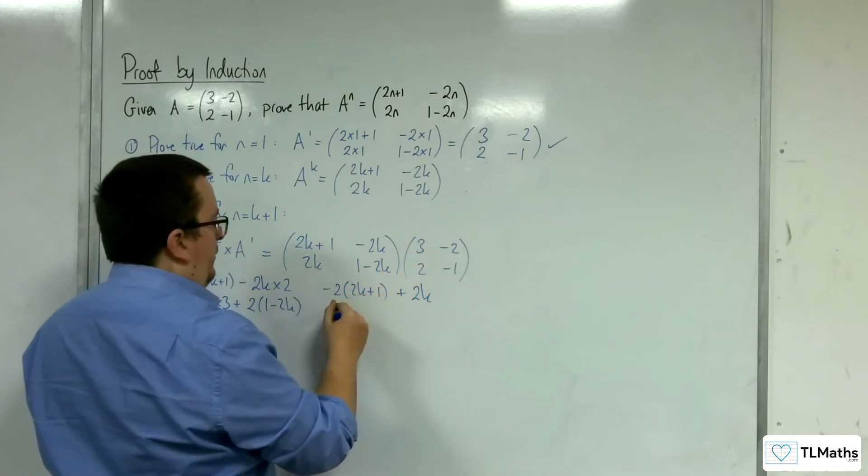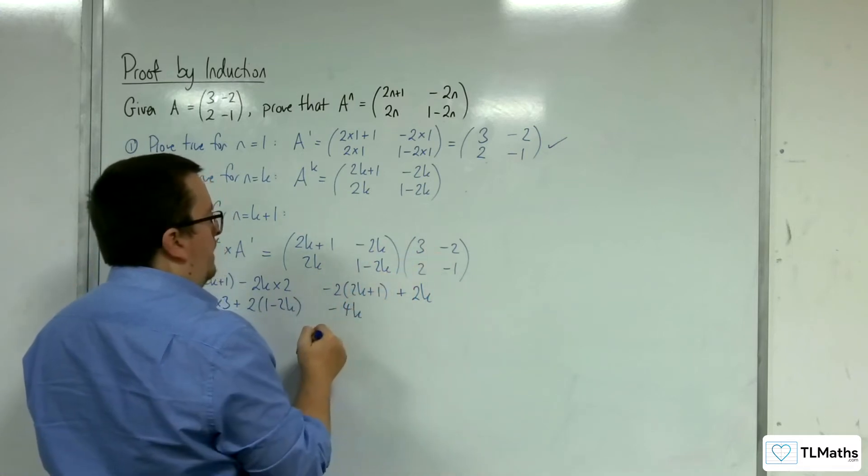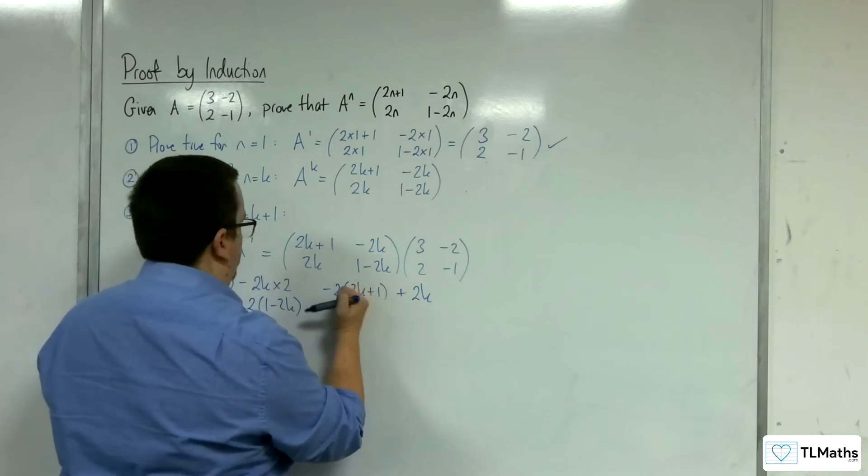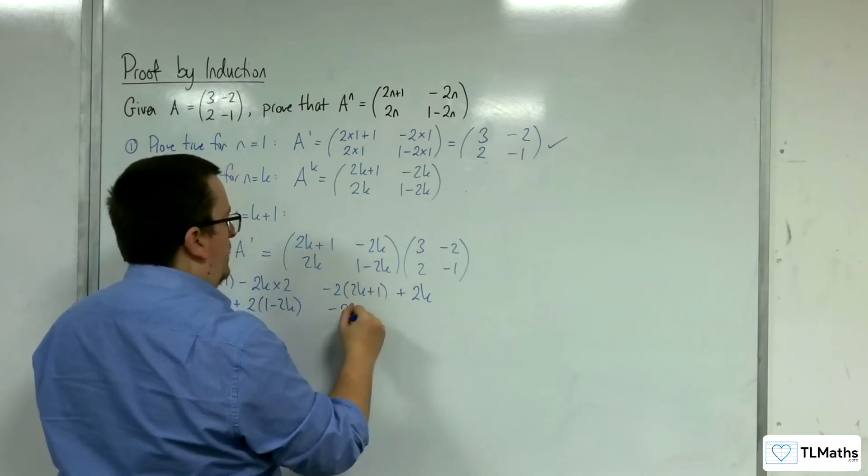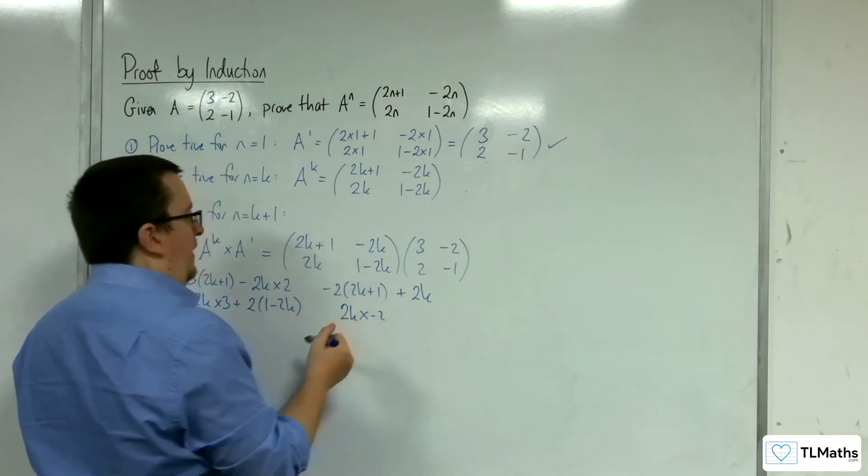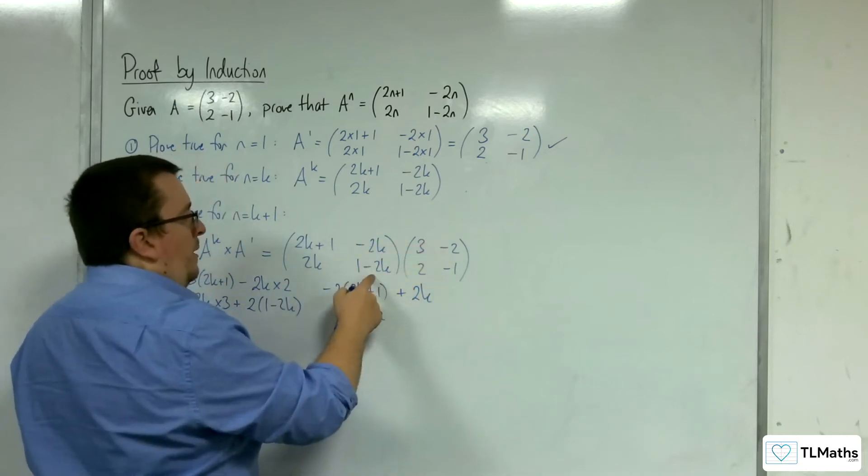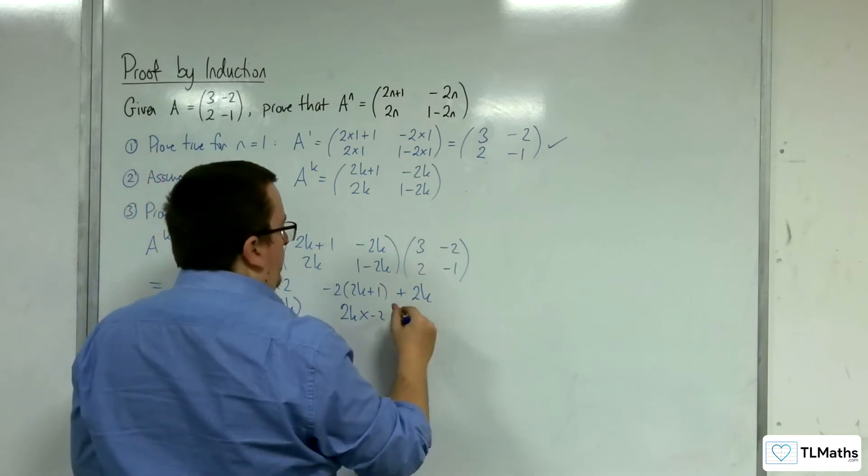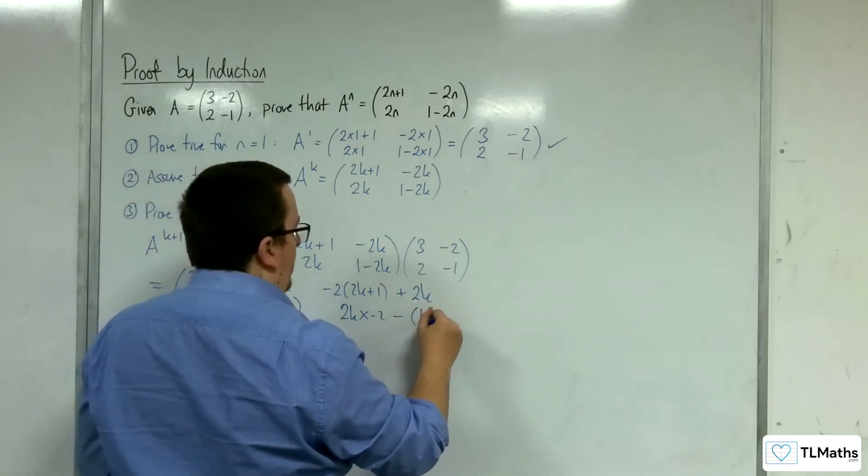And we've got 2k times -2, and 1-2k times -1, so take away 1-2k.